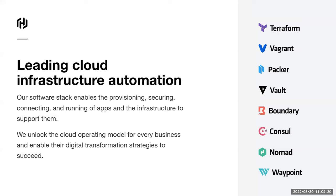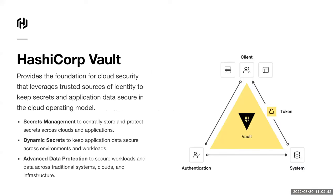Shifting gears, I wanted to talk about Vault specifically. As we go through this transition to cloud infrastructure, there's a major shift happening in how we think about security. Vault plays three major roles in that transition. The first is around secrets management — how you store secrets, how you distribute them throughout your infrastructure, how you rotate them, and how you manage the general lifecycle of these secrets.